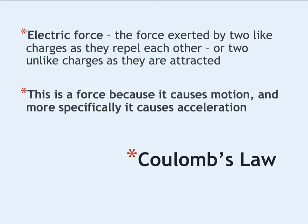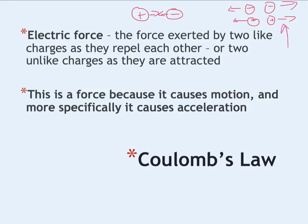First, Coulomb's Law. We've already talked about how charges repel and attract, and this is called the electric force. Specifically, this is the force exerted by two like charges as they repel each other, or two unlike charges as they are attracted. If you have a positive and a negative, they will be drawn towards each other — that is attraction. If you have two like charges, like two negatives or two positives, they will be forced away from each other — that is repulsion. These arrows represent the electric force, and the reason this is a force is because it causes motion and specifically causes acceleration. This is known as Coulomb's Law.